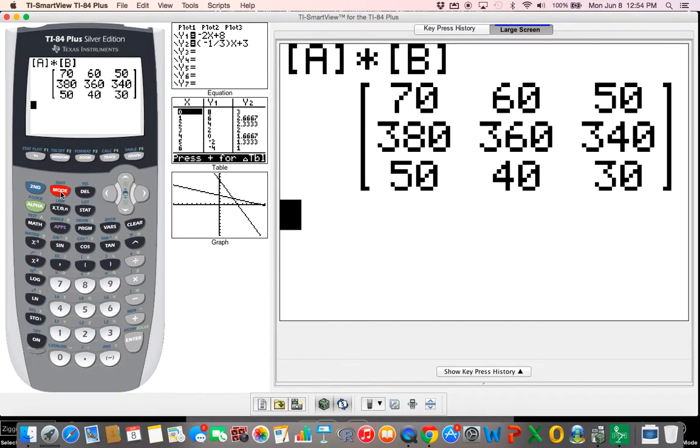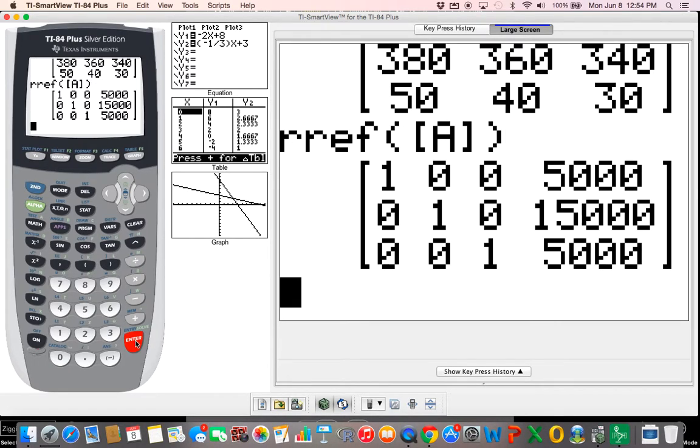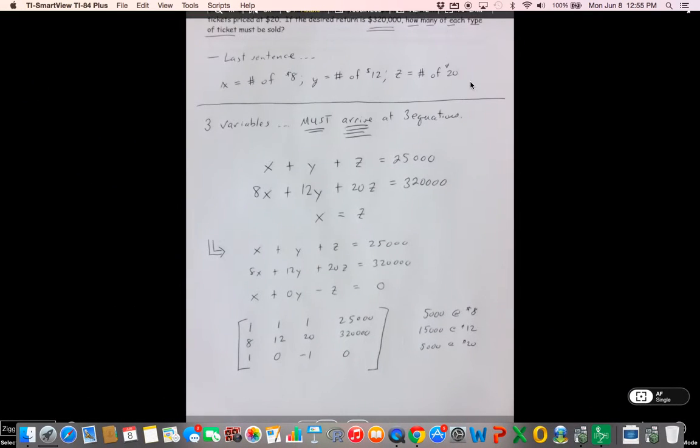Now I know somewhere previously I've done that RREF thing. So I'm going to go second function. Well I don't want that one, let's see if I did it the line before. And there's what I need, so I don't have to go back through all that stuff. So when I get this, I see that my solution tells me what? Well, this first line right here tells me that my X, which is the $8 tickets, is 5,000. The second line tells me my Y's, which was my $12 tickets, was 15,000. And I need 5,000 of the $20 tickets. That's why I wrote all this down over here, just because that's what I do.